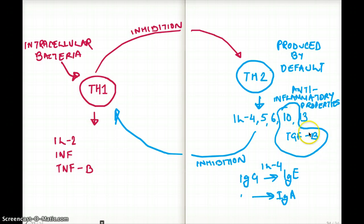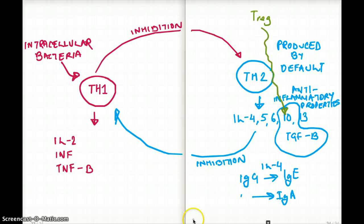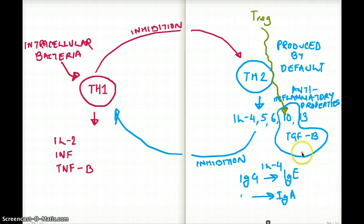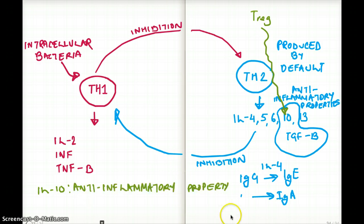IL-10 and TGF-beta are also secreted by a different class of T cells called T regulatory cells. T regulatory cells also produce IL-10 and TGF-beta. T helper 2 among many interleukins is making IL-10 and TGF-beta, and T regulatory cells also produce IL-10 and TGF-beta. Since IL-10 has anti-inflammatory properties, T regulatory cells also have anti-inflammatory properties.